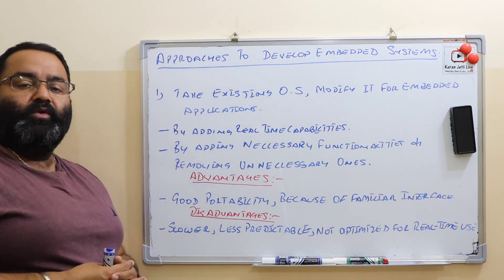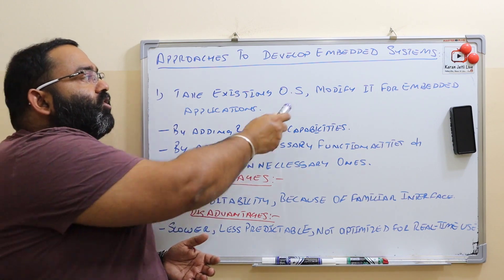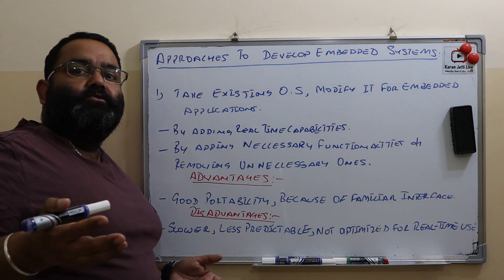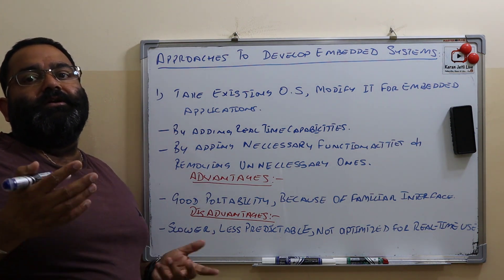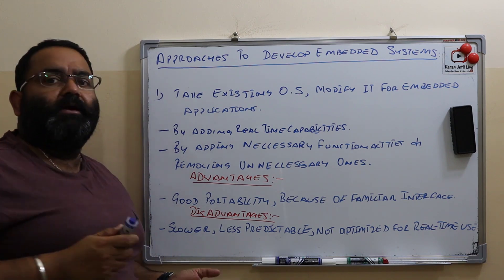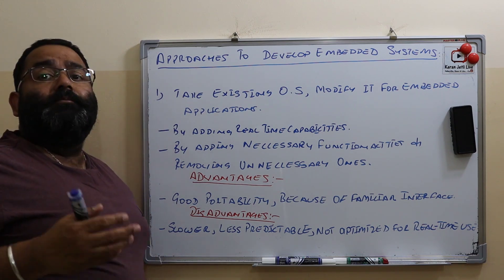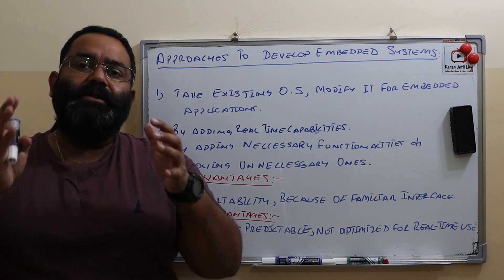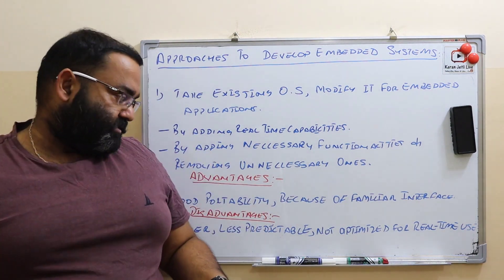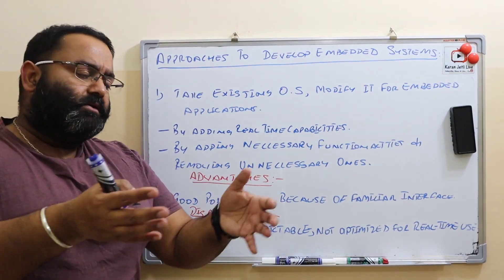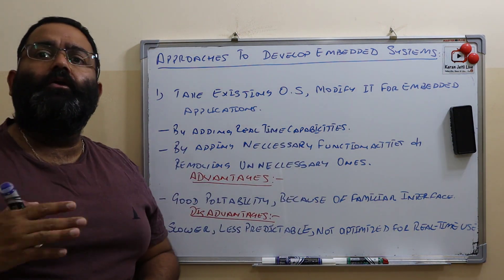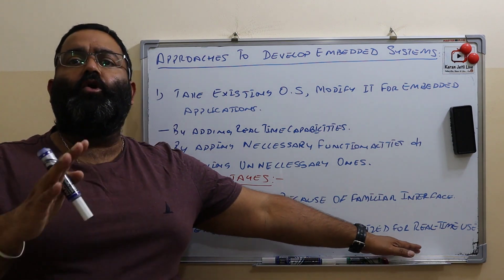What are the disadvantages of modifying our normal operating system for embedded applications? They are slower, because they are not dedicated embedded systems - it is something else which we are modifying so that it can work as an embedded system. They are unpredictable - when we develop a dedicated embedded system we know what result it is going to give us, but here we modified some existing operating system to perform something else. They are also not optimized for real-time use.